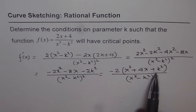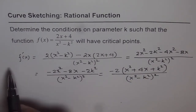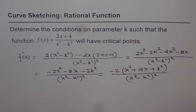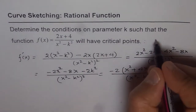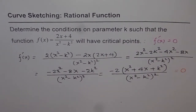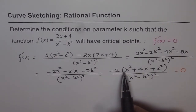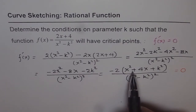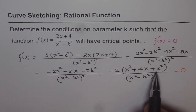For this function to have real roots — that is, for f'(x) to equal 0 — the numerator must equal 0. For a critical point, f'(x) should equal 0, so we equate the numerator to 0 and figure out the value of x for which this can be 0. That means x² + 4x + k² should have real roots.